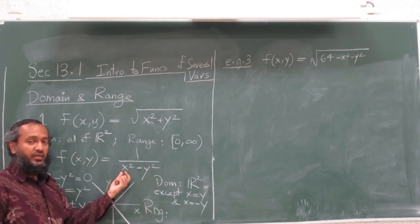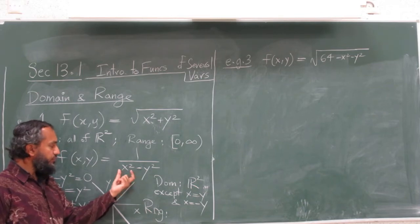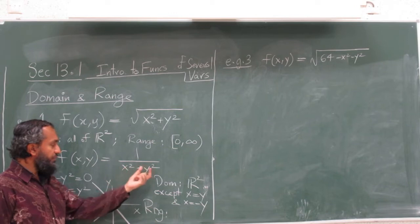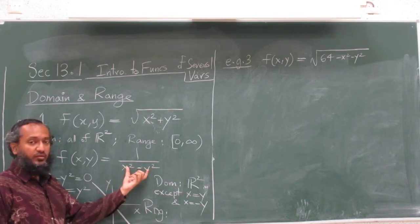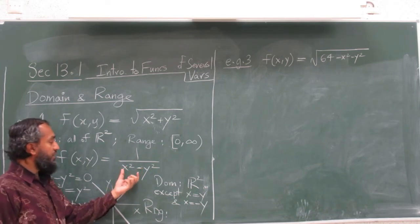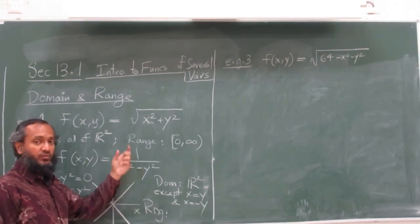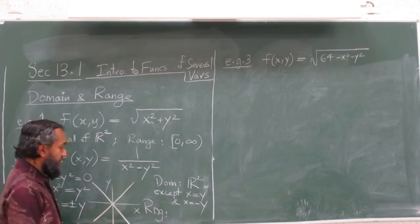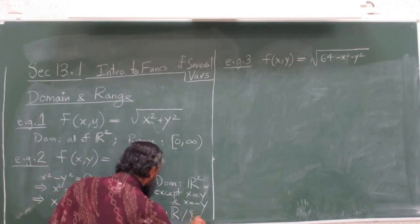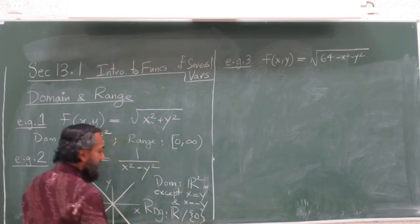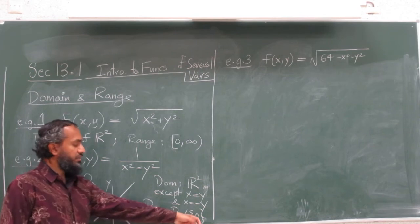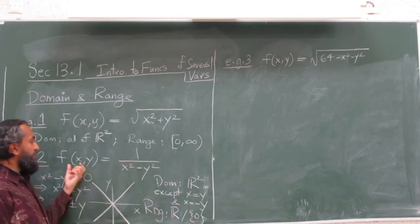For the range: this value can be negative if y squared is bigger than x squared, and can be positive. By choosing proper values of x and y, you can make any value in the denominator, which means one over that can be any value. The only value you cannot get is zero — one over something can never be zero. So the range is all of R except zero.